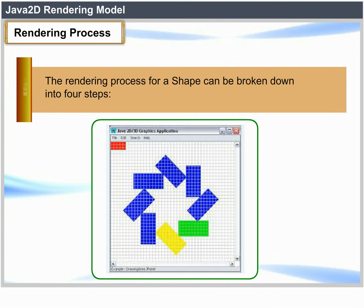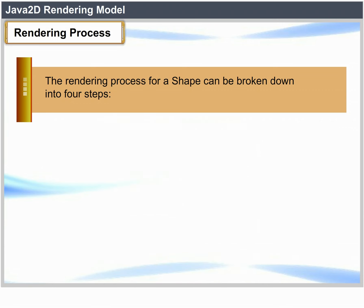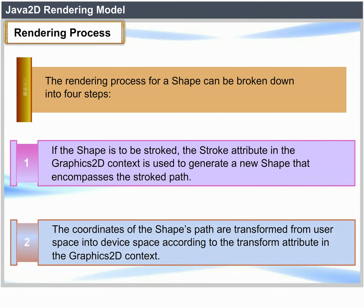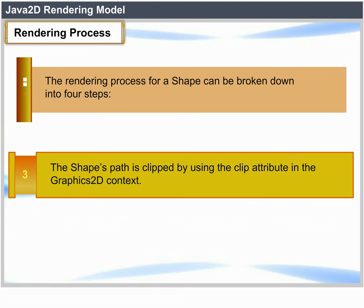The rendering process for a shape can be broken down into 4 steps. If the shape is to be stroked, the stroke attribute in the Graphics2D context is used to generate a new shape that encompasses the stroke path. The coordinates of the shape path are transformed from user space into device space according to the transform attribute in the Graphics2D context.